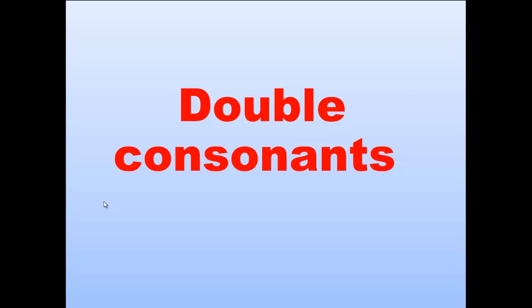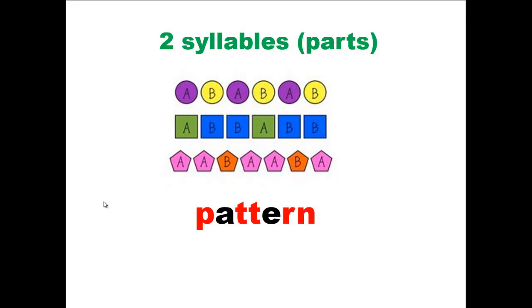Words with double consonants in the middle. The first word is 'pattern.' What does it mean? A pattern is the way in which something is arranged — a specific order of something. If you check the letters in a picture, you can find that they follow a pattern, arranged in a specific way or order.